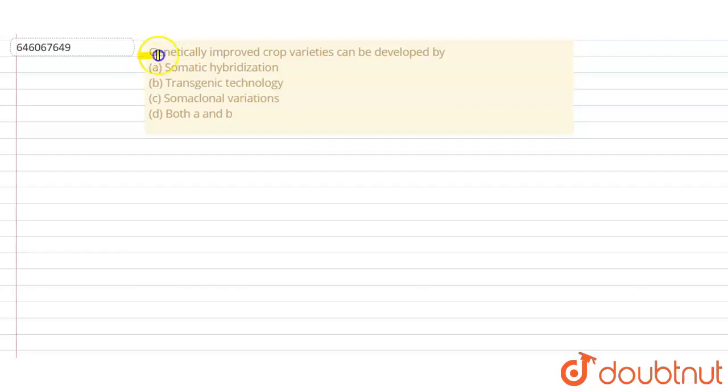Hello students, let's read the question. Genetically improved crop varieties can be developed by... So they are saying crop varieties which are genetically improved can be developed by which of the following methods?